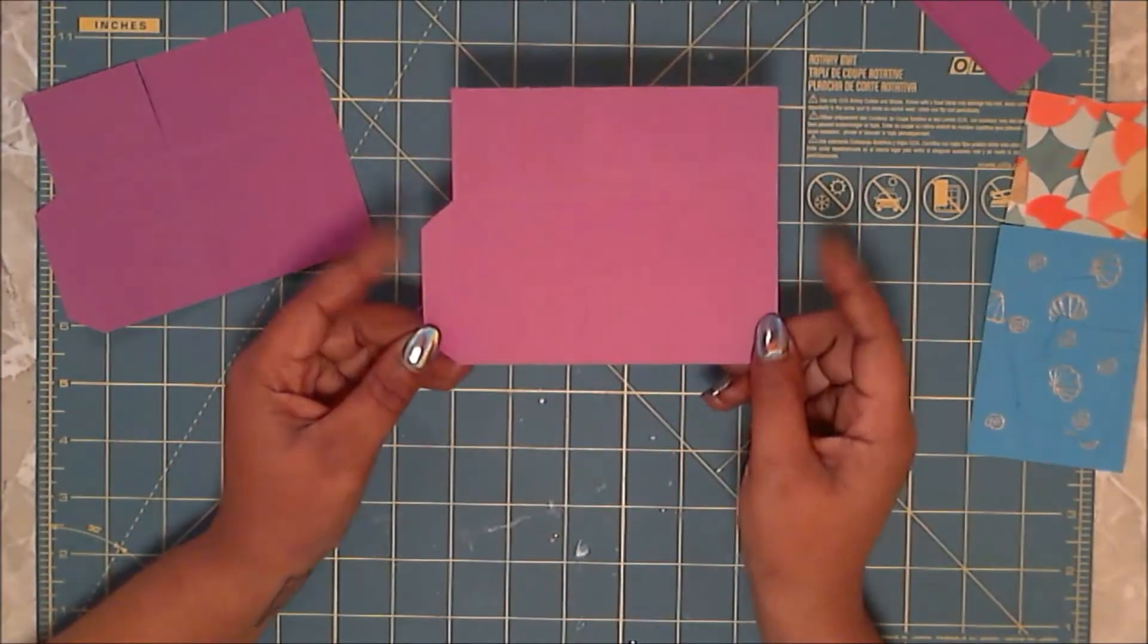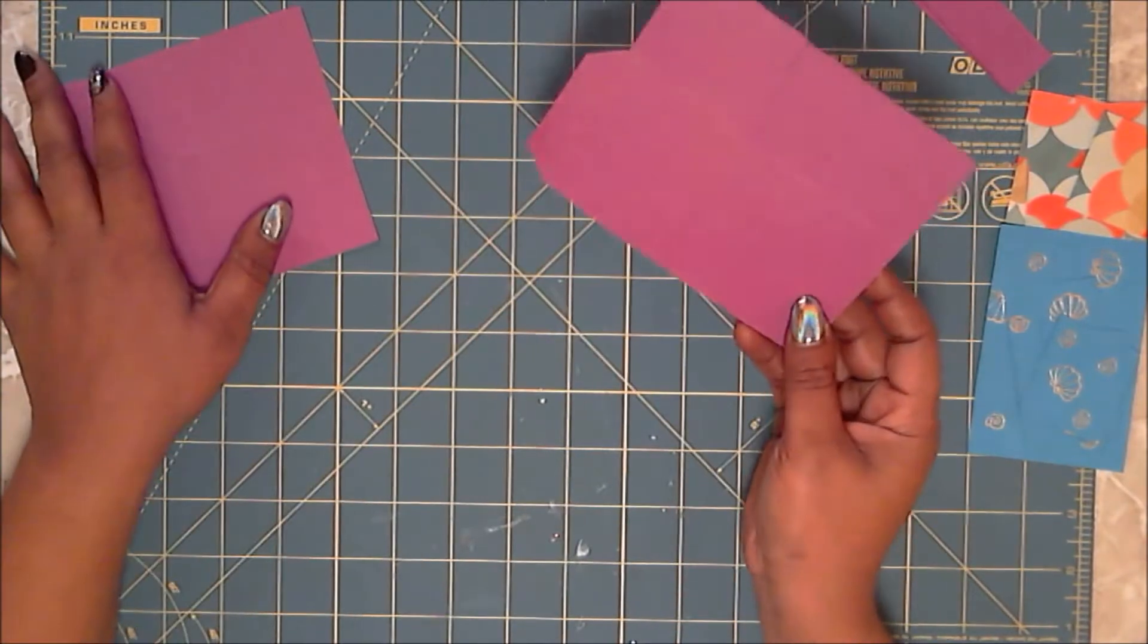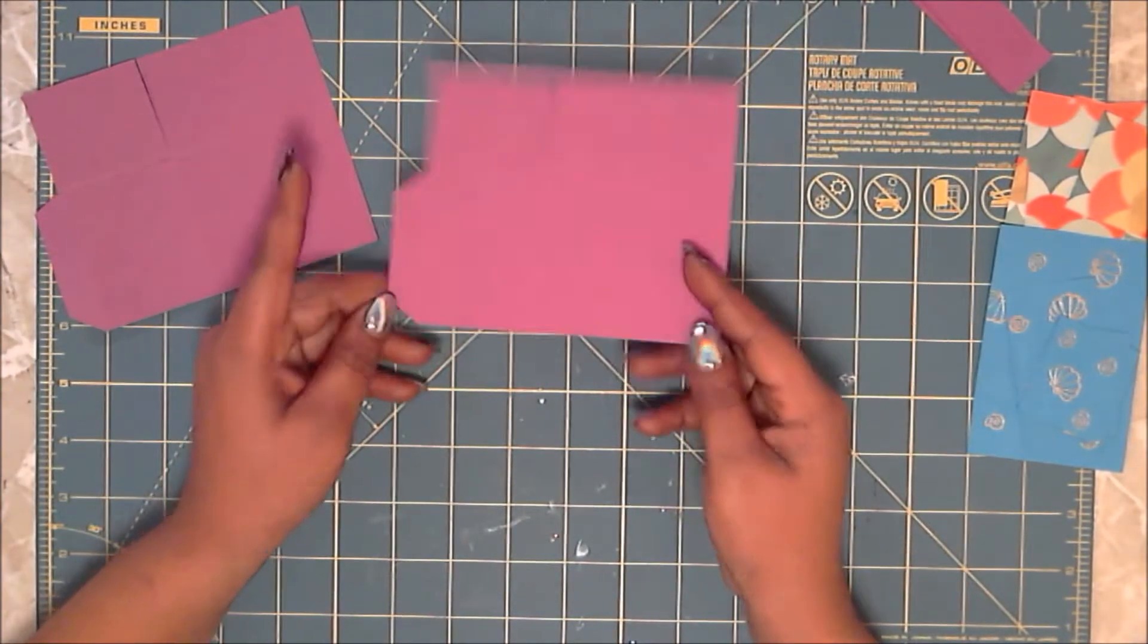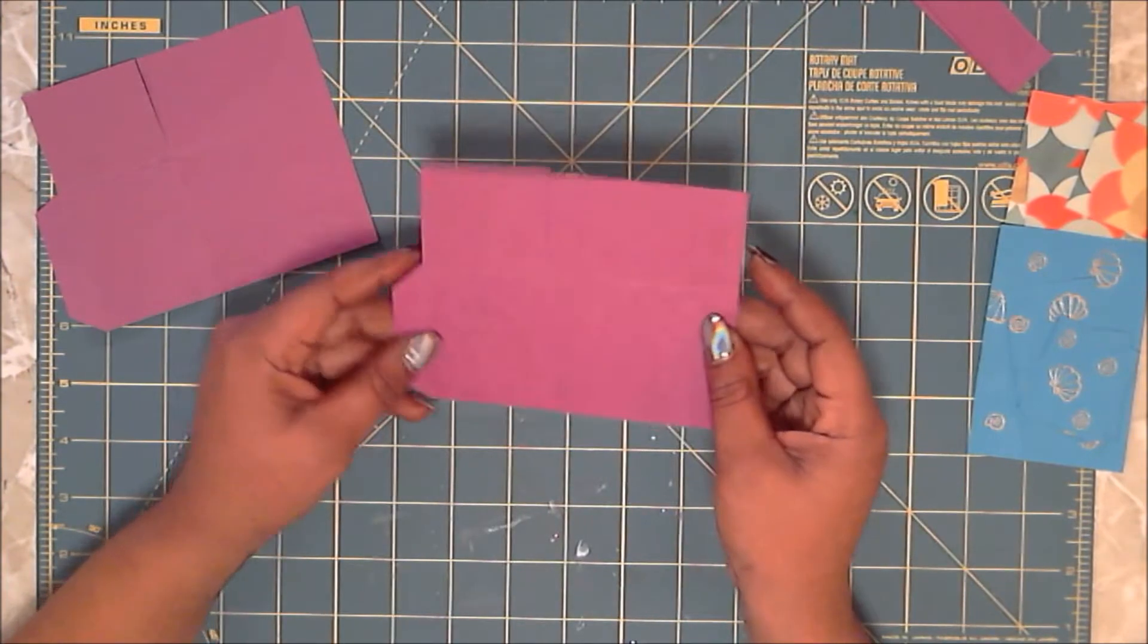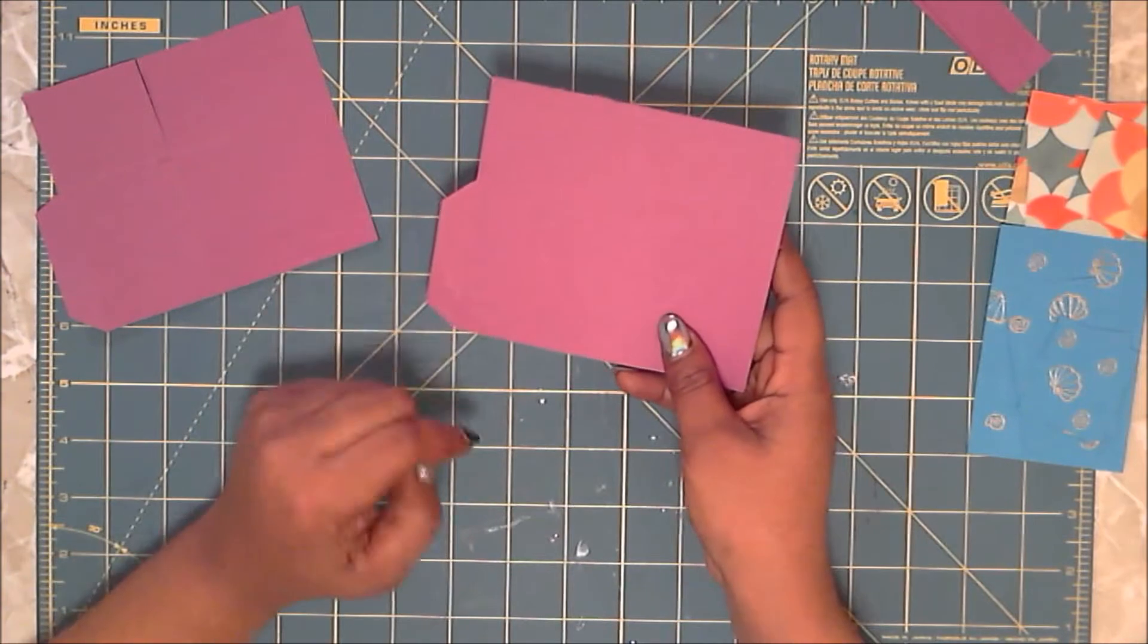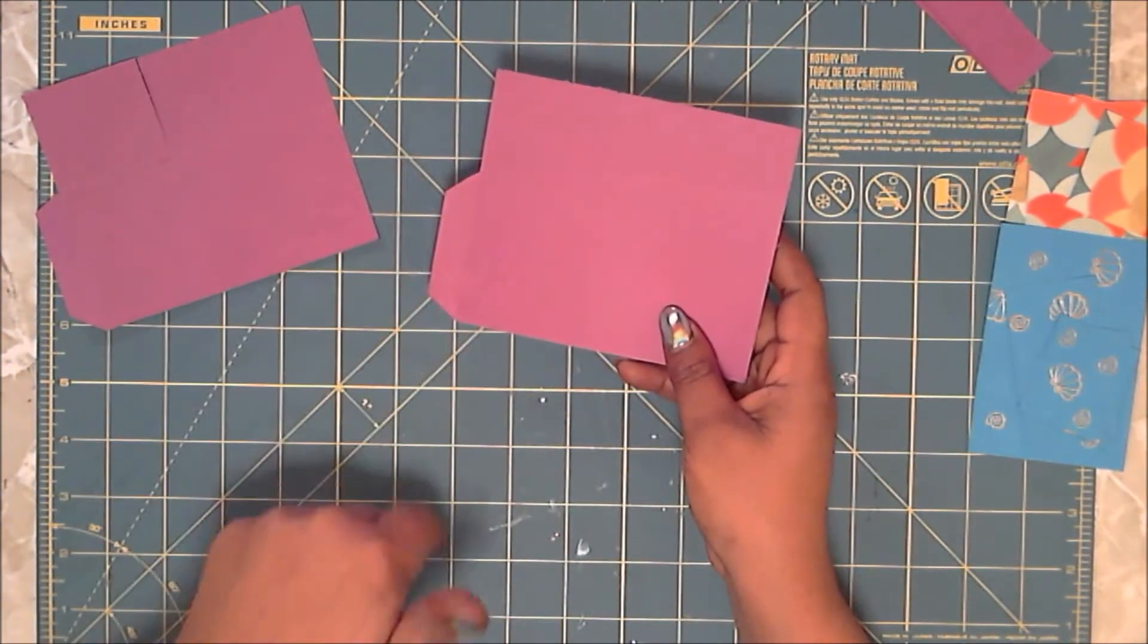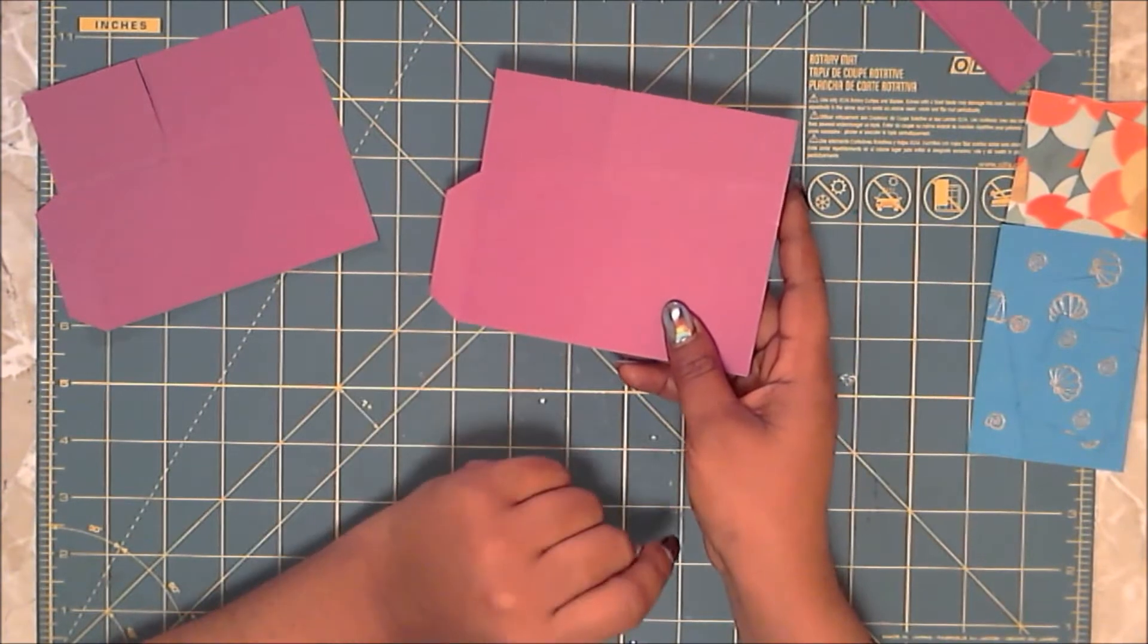To create the box today, you are going to be needing a few score marks. On your first piece of card stock that measures at four and a quarter by five and a half, you are going to hold it on the five and a half side, which is long ways, and you are going to make two score marks. One at a half an inch, and your second score mark should be at two and a half inches.